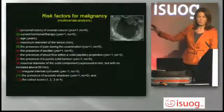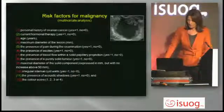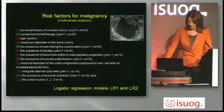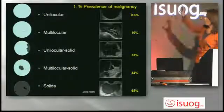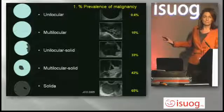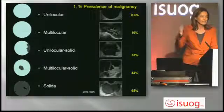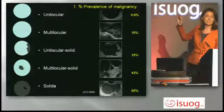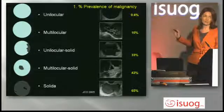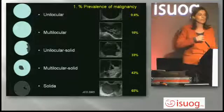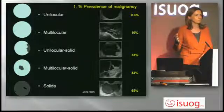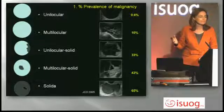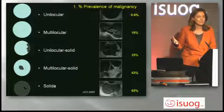We found these risk factors and according to this we developed LR1 and LR2. One very simple tool I suggested to keep in mind: just know the prevalence of malignancy for each category. For example, if I tell you there is one papillary projection, what is the prevalence of malignancy?